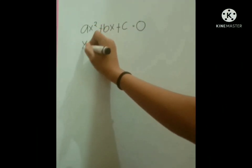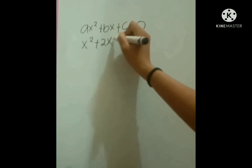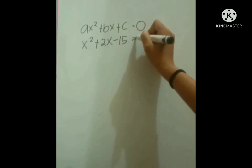On the other hand, factoring is one of the methods to solve quadratic equation. For example, let us find the root of ax squared plus 2x minus 15 equals zero.